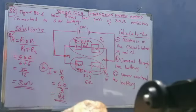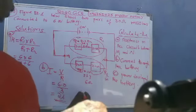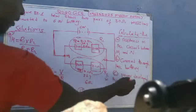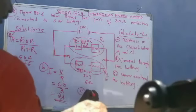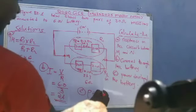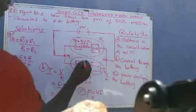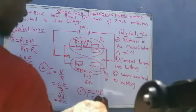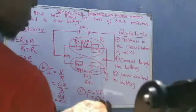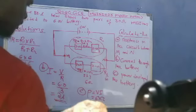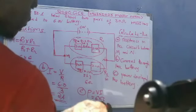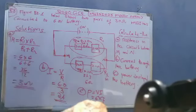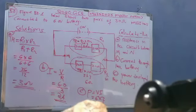Question (c) demands us to calculate the power developed in the battery. Power equals voltage times current. The voltage is 6 V and the current is 2 A, so P = 6 times 2 = 12 watts.